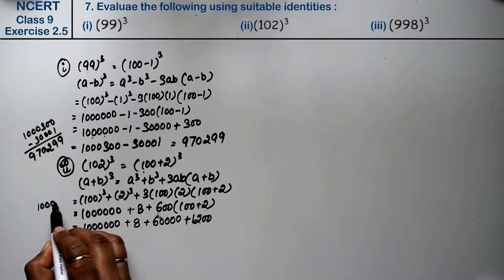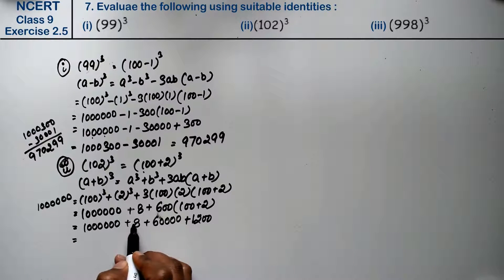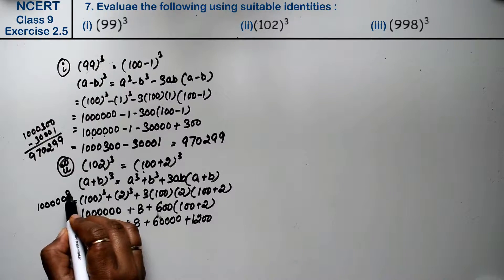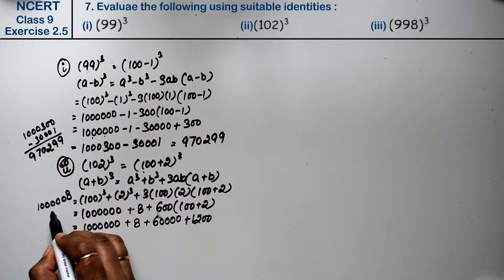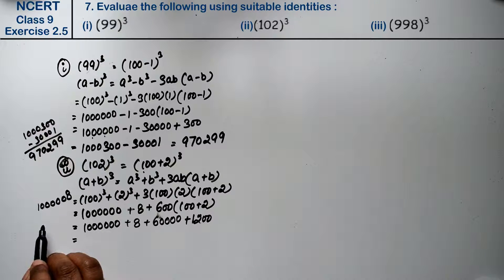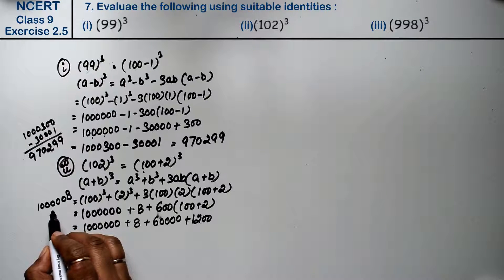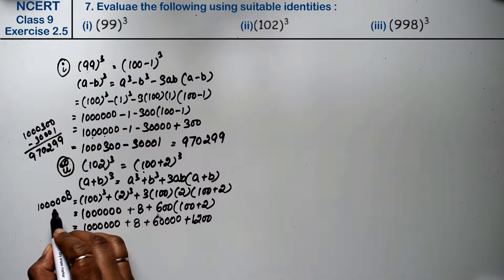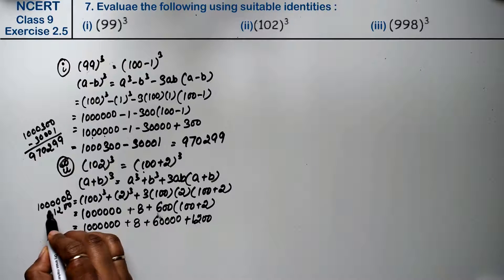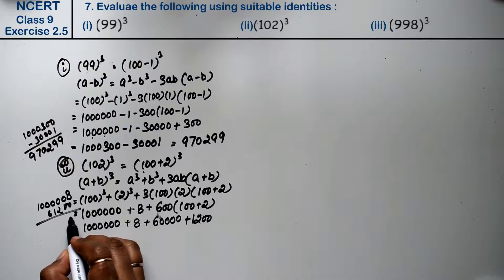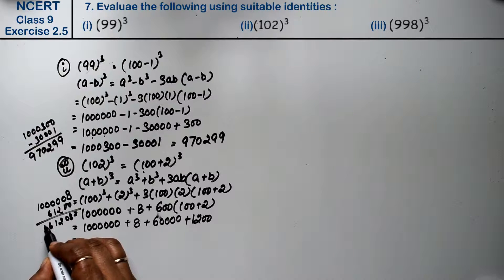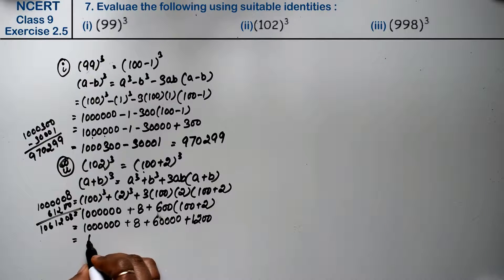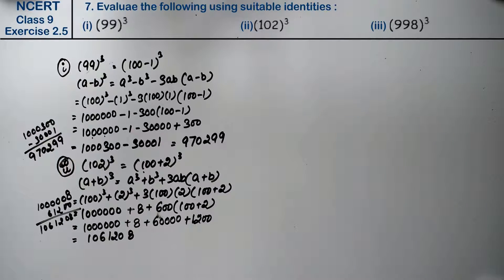Now adding all of these: 1,000,000 plus 8 plus 60,000 plus 1,200. Adding 8 gives ...8. Then adding 60,000 and 1,200 together gives 61,200. So the final answer is 1,061,208.